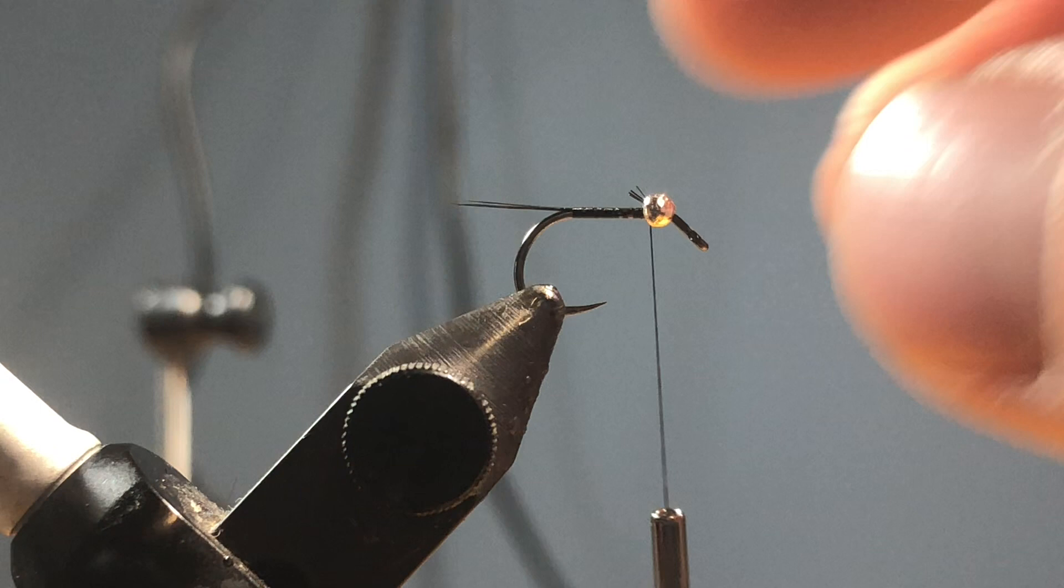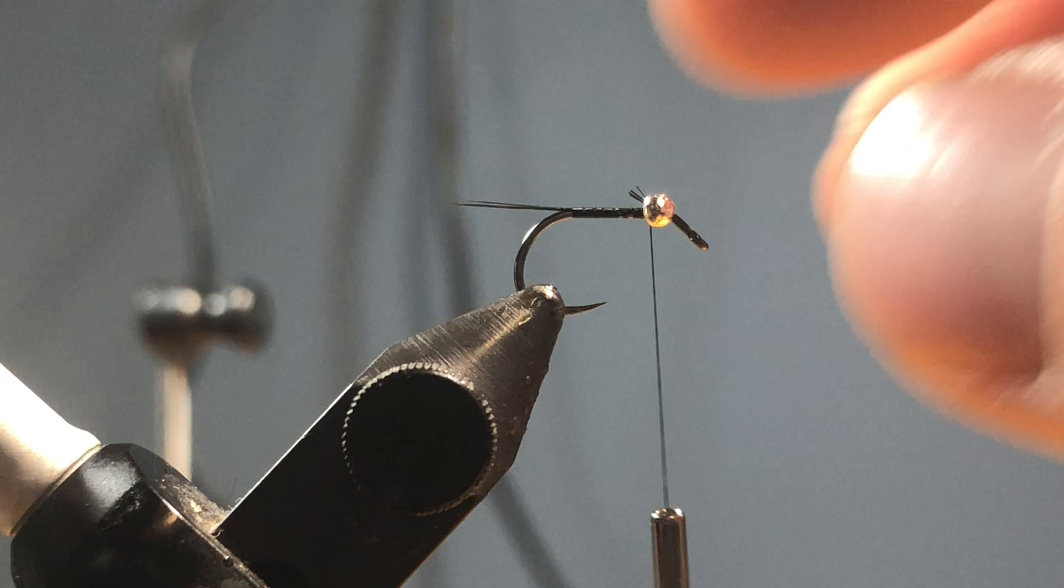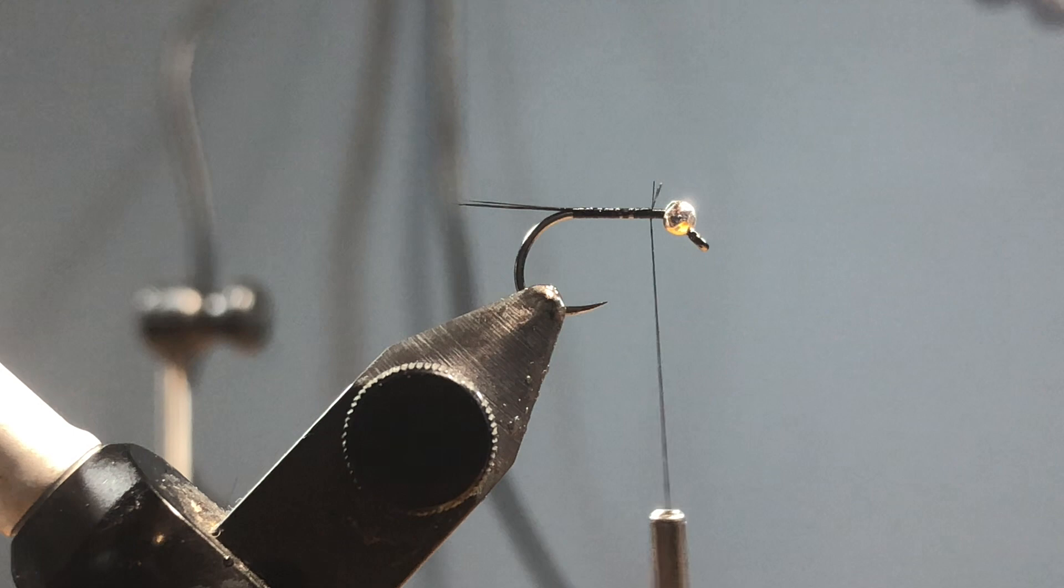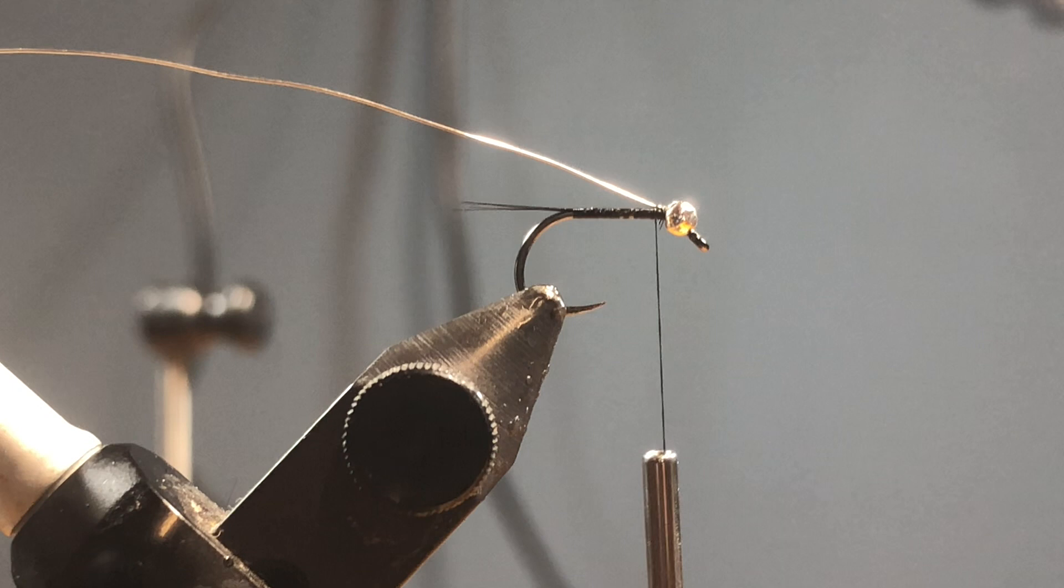And then I'm gonna use some size small silver ultra wire right there. And what I'm gonna do is jam this all up in the bead. It's a very technical fly tying term, so you guys are learning a lot here on About Trout. Now that I got that in there, I'm gonna grab some Sulky Holoshimmer in red.